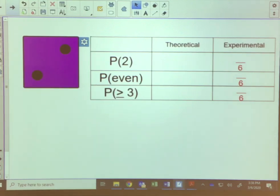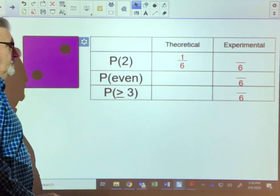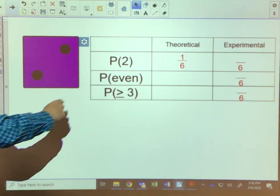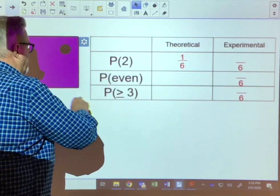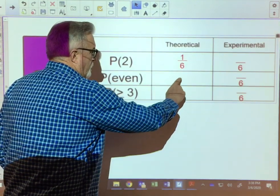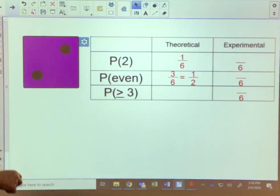Let's look at theoretical versus experimental when we're talking about rolling a dice. We know that on a standard dice there are six outcomes, one through six. So our total outcomes, there's six of them. And there's only one two on this dice, and so the probability, the theoretical probability of rolling this dice and getting a two is one-sixth. For getting an even, well there's three even numbers on this, so that would be three over six, which will simplify down to one over two.